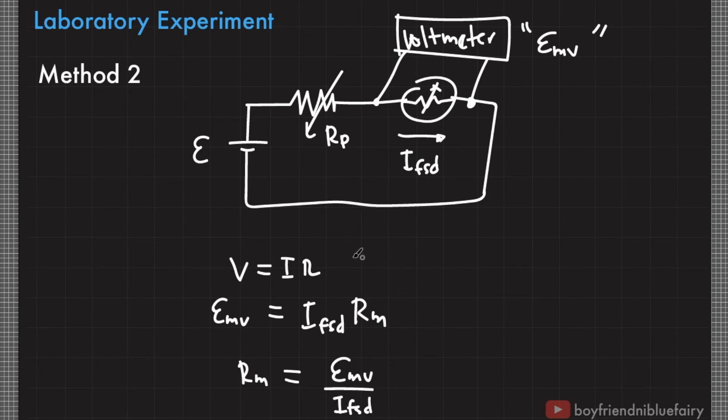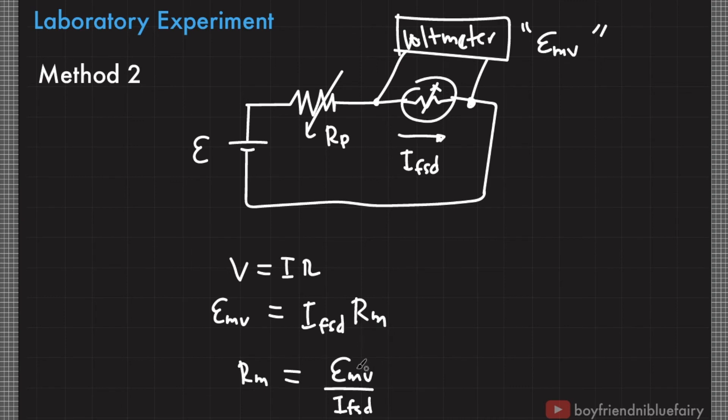You have a value for the potential difference across the galvanometer, and this is just a direct reading from the voltmeter.